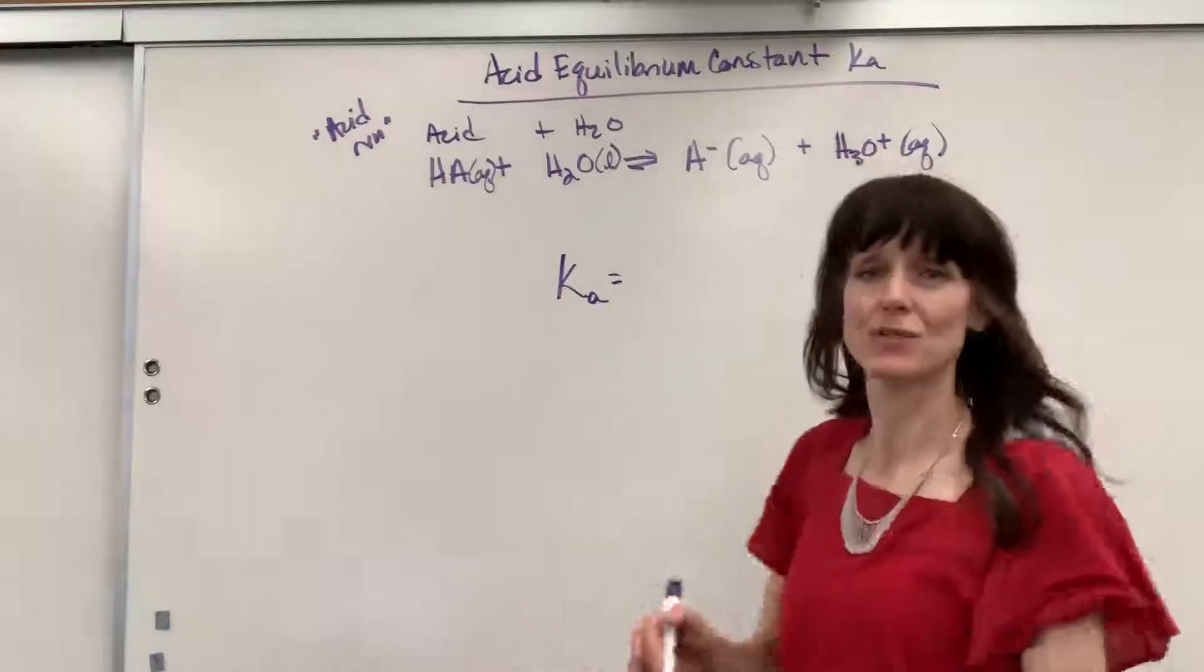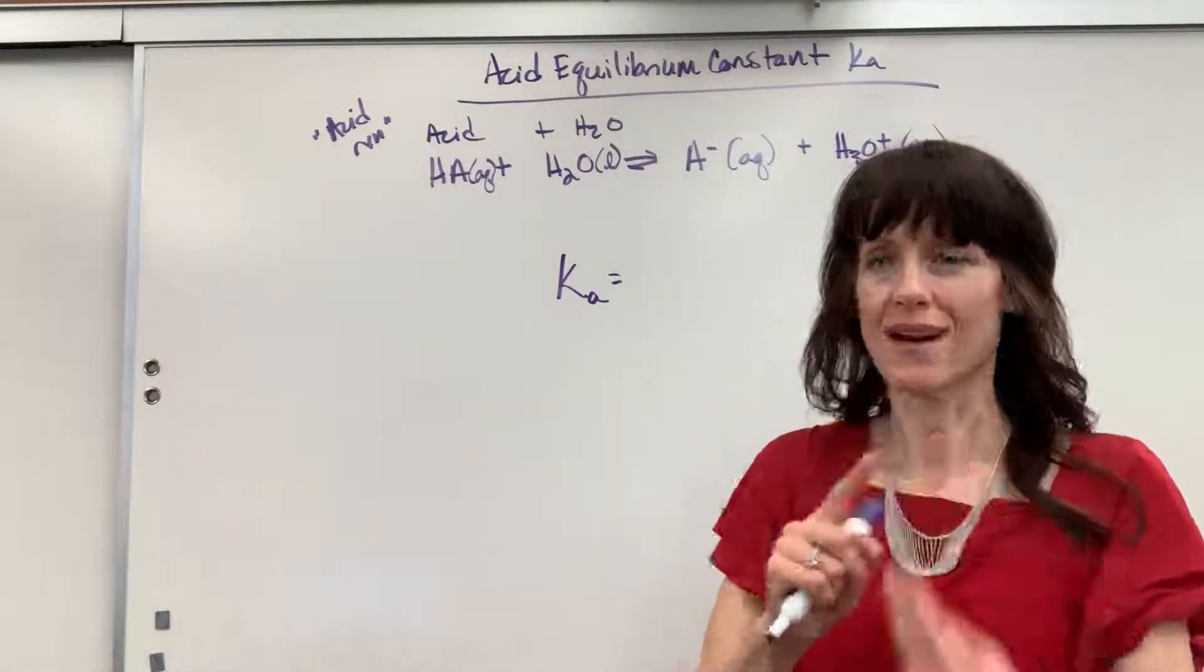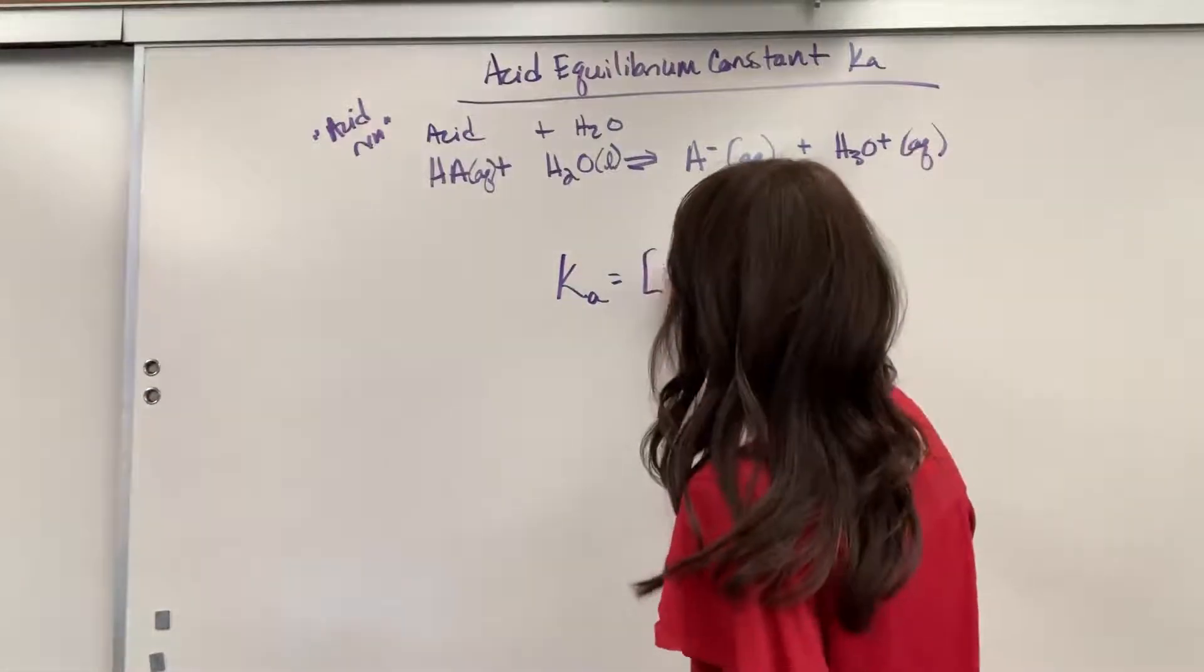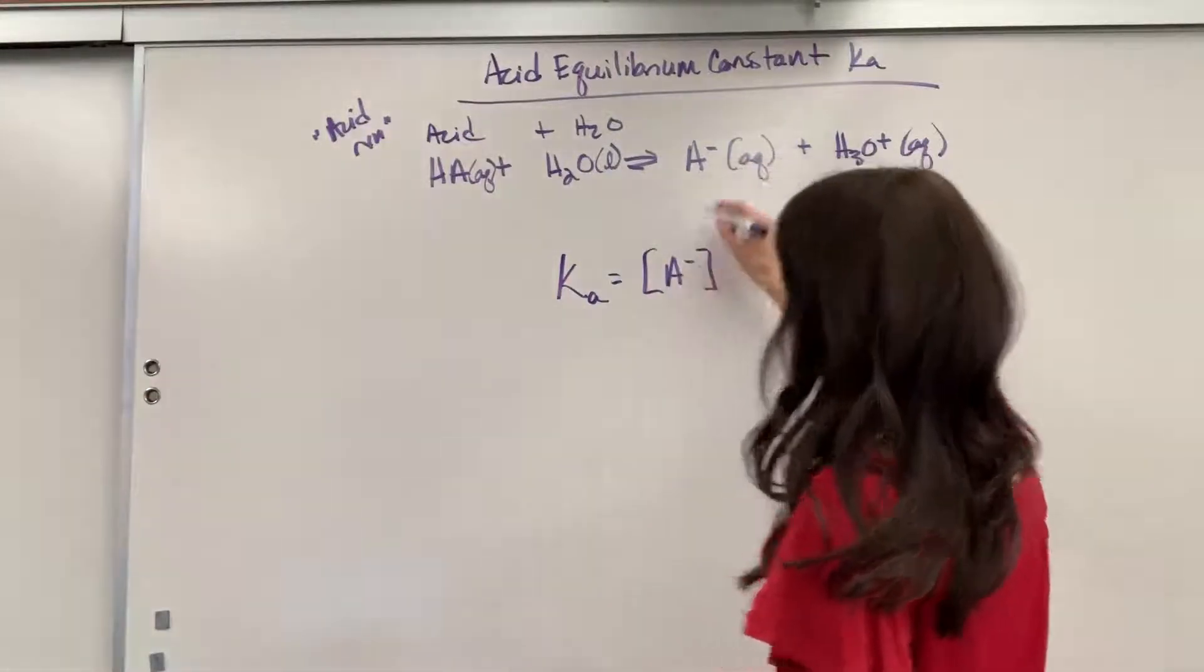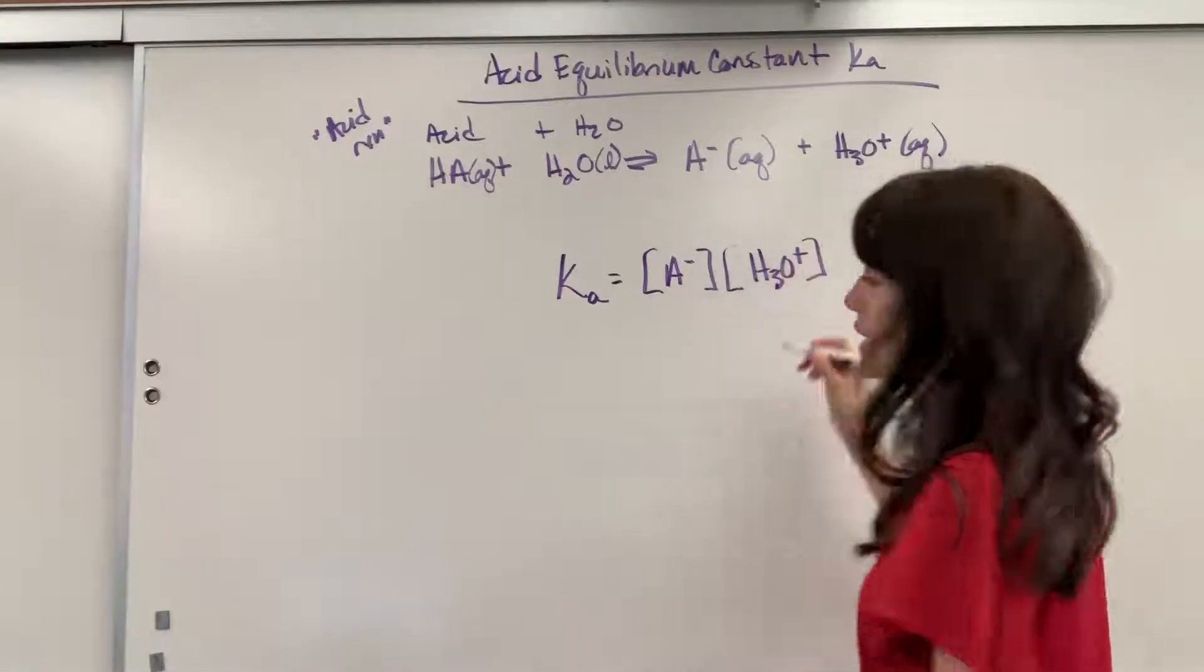So products over reactants, we only use aqueous and gas. We never use liquid or solid. So I've got my conjugate base, that A minus, times the hydronium. This is H3O+.